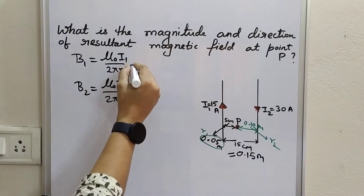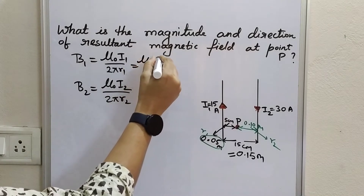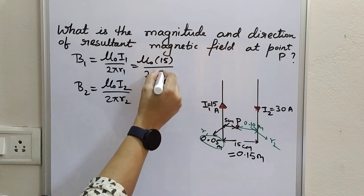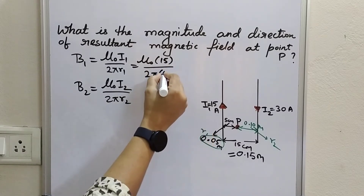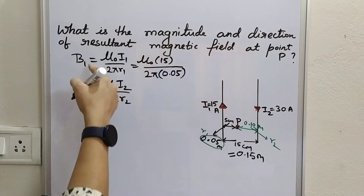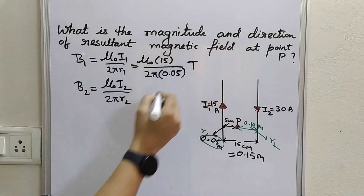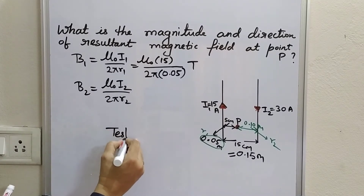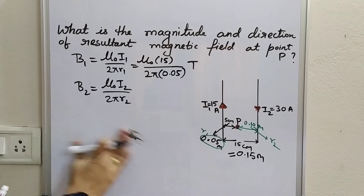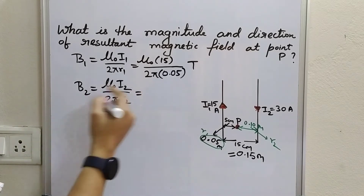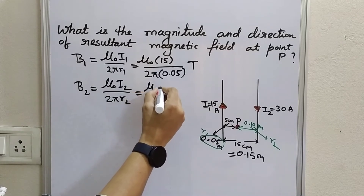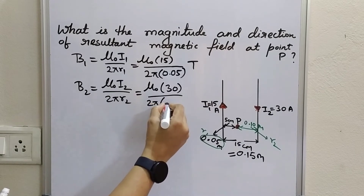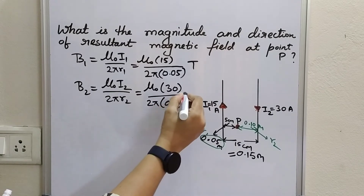Substituting the values: B1 = μ₀ × 15 / (2π × 0.05) Tesla, and B2 = μ₀ × 30 / (2π × 0.1) Tesla. Both values are in Tesla, the SI unit of magnetic field induction.